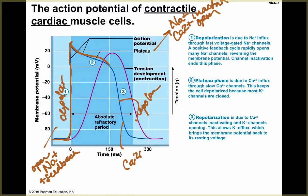Repolarization begins when calcium channels inactivate — they're not closed, they're inactive — and potassium channels open, allowing the membrane potential to return to resting values. Looking at tension on the graph, tension increases through this plateau stage. Your tension is highest toward the end of the plateau because at that point you're getting the maximum action potential effect, then it quickly decreases as the action potential fades.